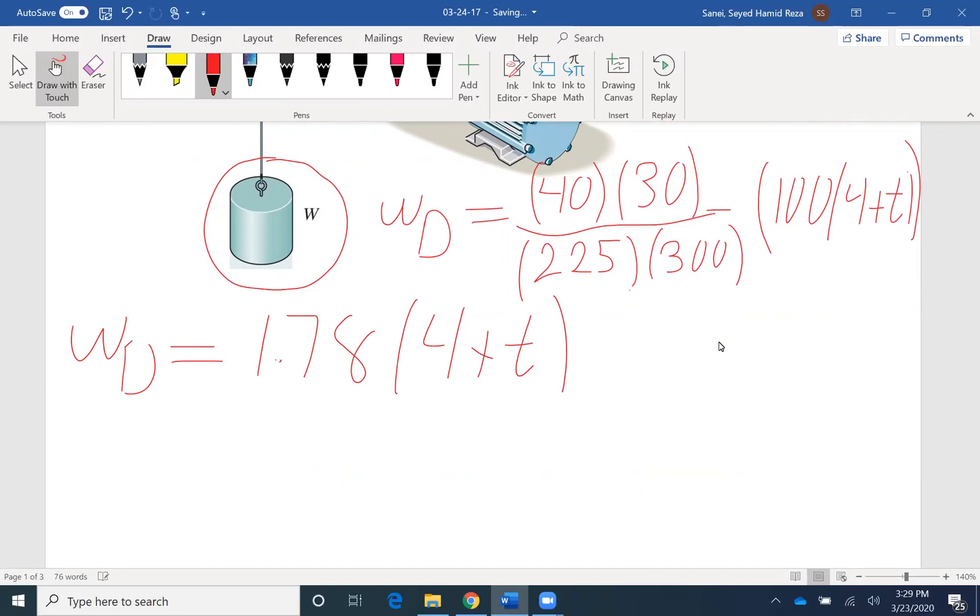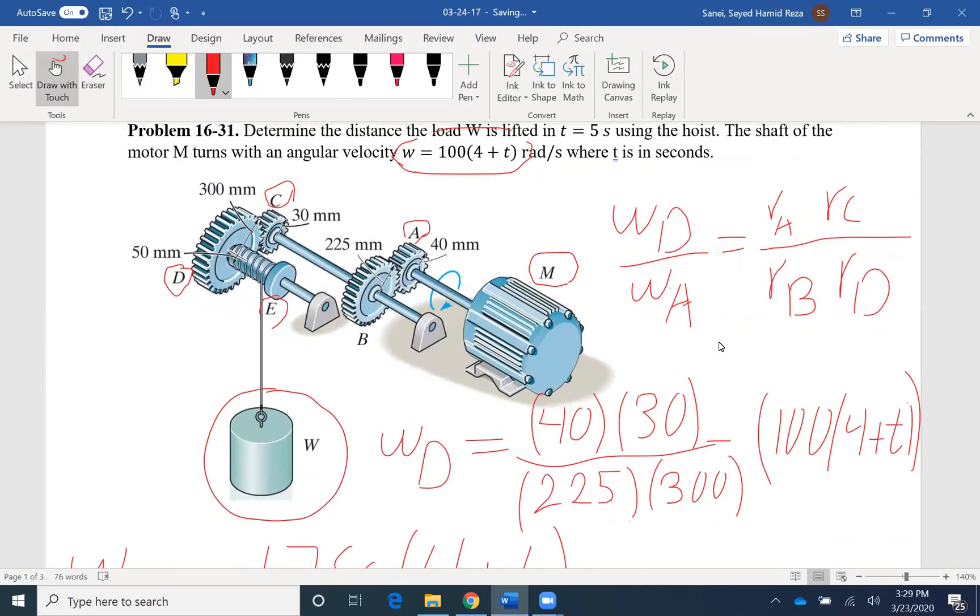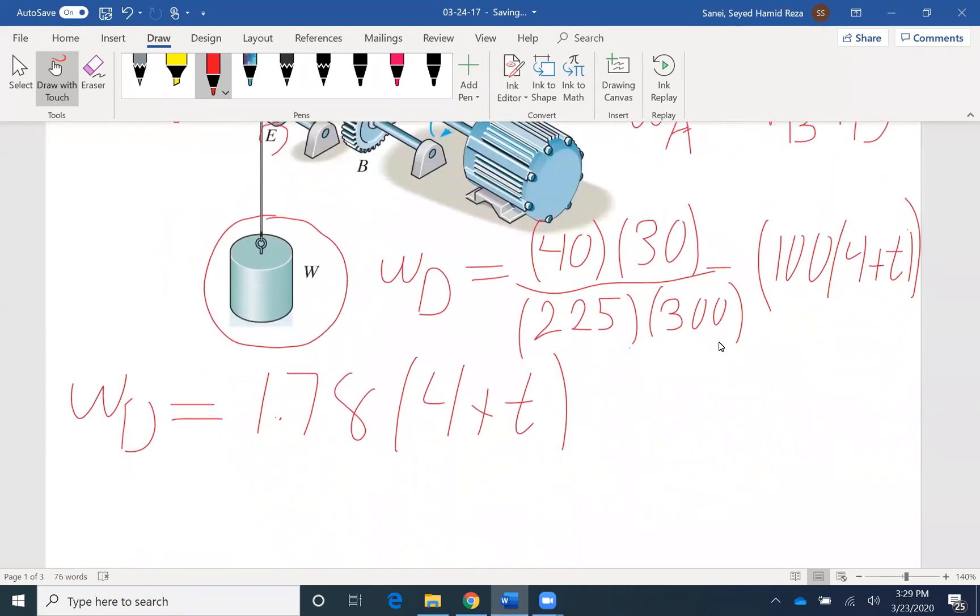So I found omega D directly from omega A. You can find omega D by writing the gear ratio between each set of gear, between gear A and gear B, find gear B omega, and then omega B and omega C would be the same, and then write the gear ratio again between omega C and omega D and find omega D. Both approaches will yield the same result.